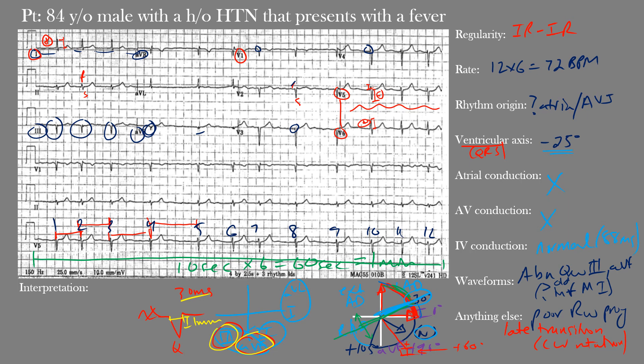Our final interpretation: we have an irregularly irregular rhythm at a normal rate with no clear or well-defined P waves, normal intraventricular conduction, and abnormal Q waves in leads III and AVF. This is a case of atrial fibrillation with evidence of a prior inferior MI. Note that atrial fibrillation is at a normal rate — 72 bpm — so there is no rapid ventricular response. The pathological Q waves in leads III and AVF represent the evidence of that prior inferior infarction. In conclusion, the 84-year-old male with hypertension presenting with fever has an EKG showing atrial fibrillation and evidence of a prior inferior infarction.